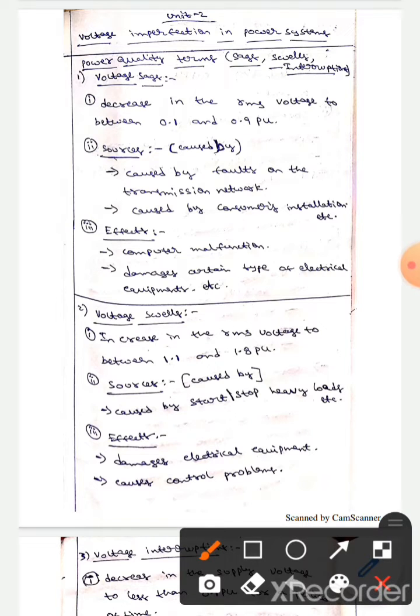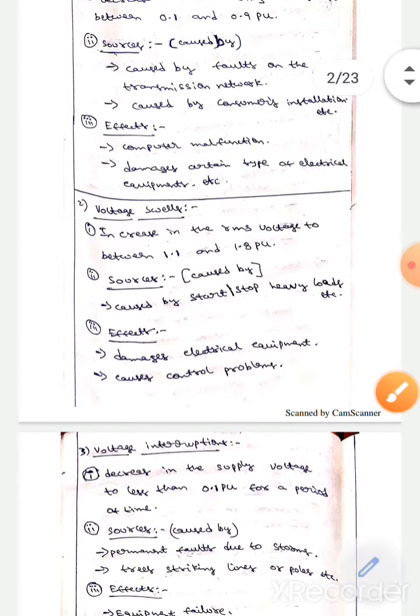The first one is voltage sag. It is a decrease in the RMS voltage to between 0.1 and 0.9 pu. It is caused by faults on the transmission network and also by customer's installation. The effects are computer malfunction and damage of certain types of electrical equipment.